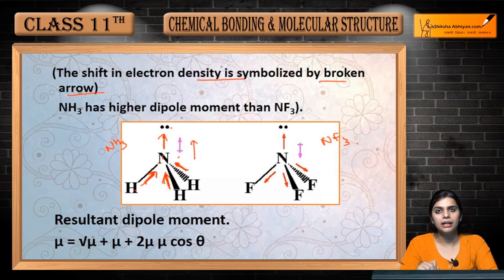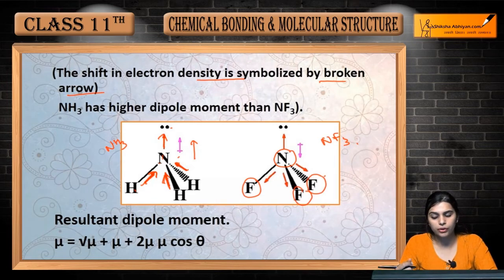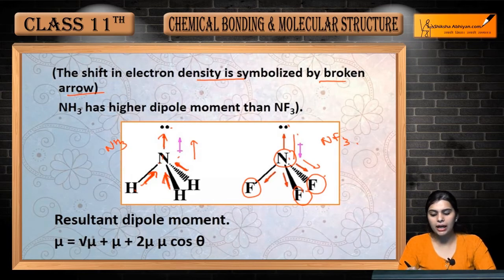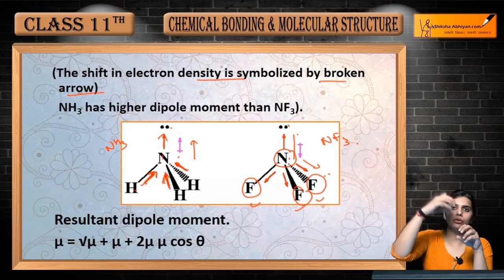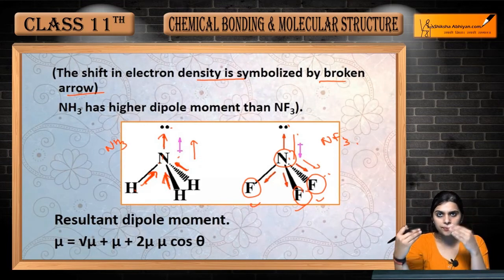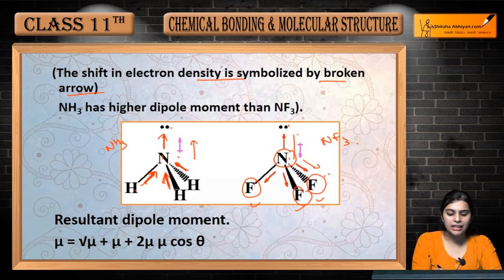Jitna zyada electronegative atom hoga, utna zyada apne paas electrons ko attract karega. Nitrogen aur hydrogen mein se kaun electronegative hai? Nitrogen. Toh nitrogen electron ko withdraw karega apni taraf is bond mein. Lekin nitrogen aur lone pair mein se kaun zyada electronegative hai? Lone pair. Toh yeh apni taraf attract karega — to resultant upward side sab add ho rahi hai. Lekin agar NF3 ki baat karein — central atom nitrogen hai, surrounding atoms fluorine hain. Fluorine zyada electronegative hai, toh electron fluorine draw karega, aur lone pair bhi attract karega. Toh yahan pe resultant neeche ki taraf zyada hai.